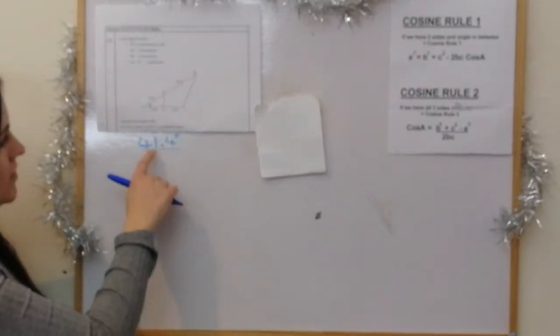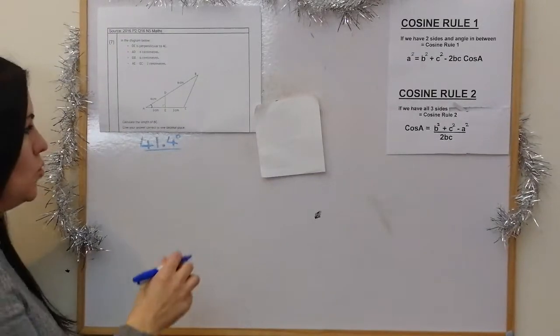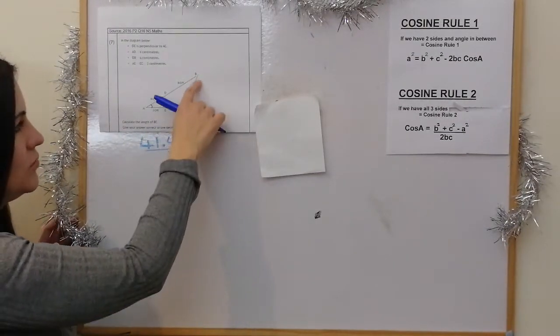As clarified, the angle here is 41.4 degrees. So we're trying to work out the length of BC, which is this side here.